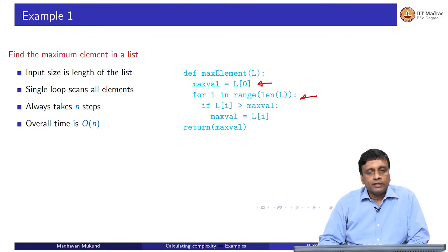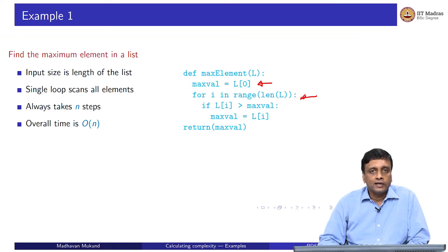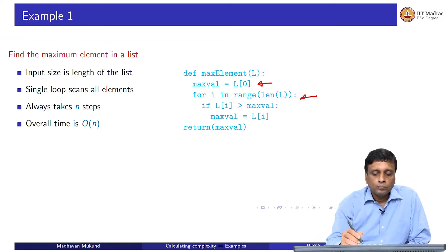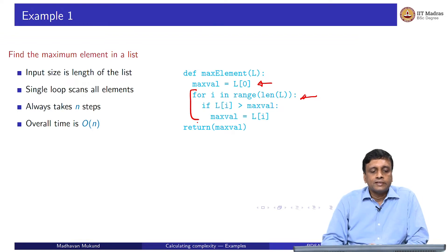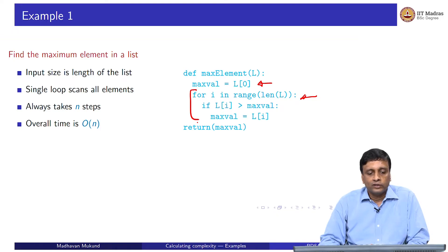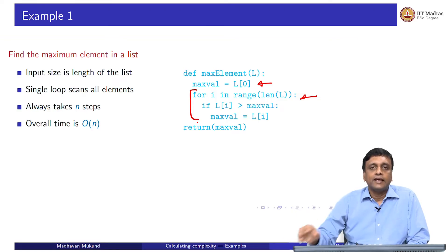The complexity of this is very easy to estimate. First of all, we have to calculate what is the input size. A natural notion of input size for this is the length of the list, because obviously if we have to find the maximum in a longer list, it will take more time. This is a single loop — a for loop which goes through all the elements in the list. It is going to always scan all the elements, because we have no particular information about this list. We do not know whether the maximum value occurs at the beginning, middle, or end. So this is a function that will always run the loop n times, where n is the size of the input list. This has worst case order n, but it is also in some sense every case order n.